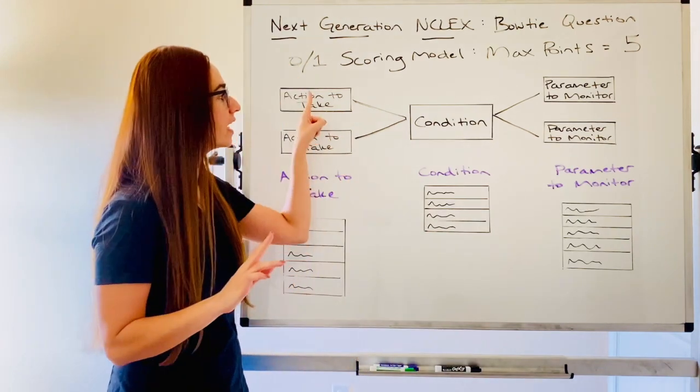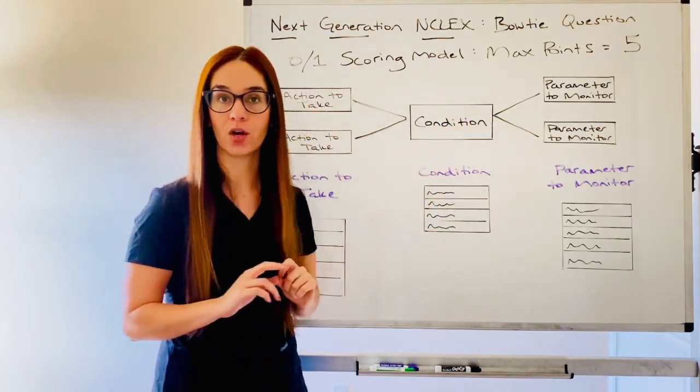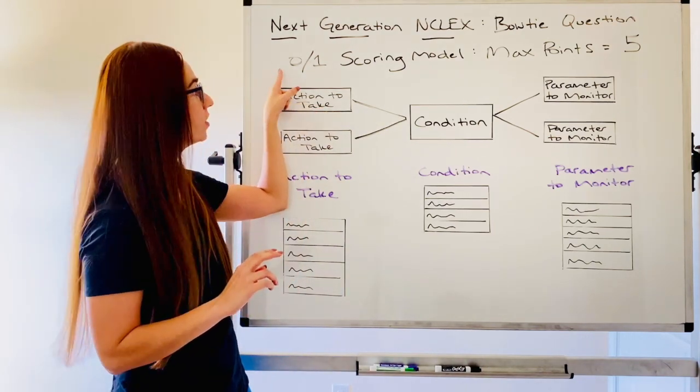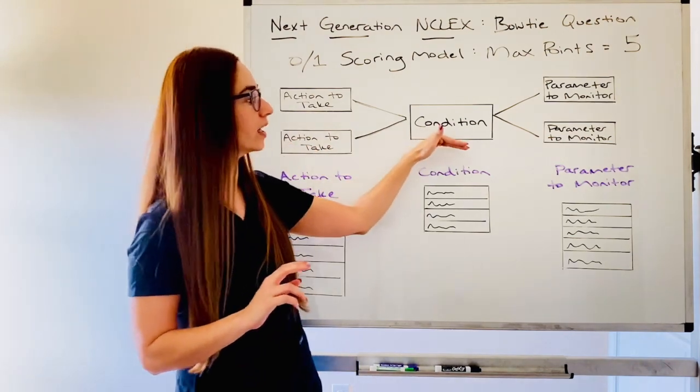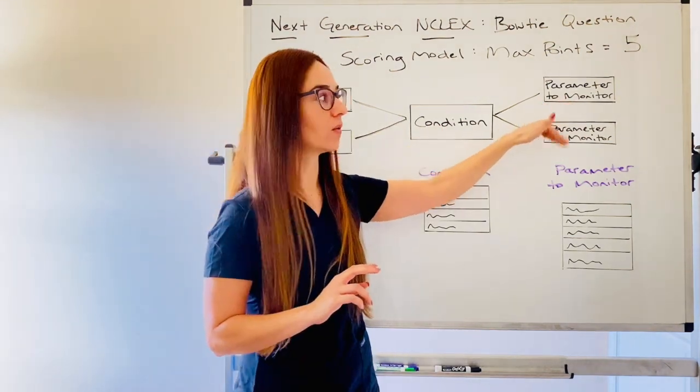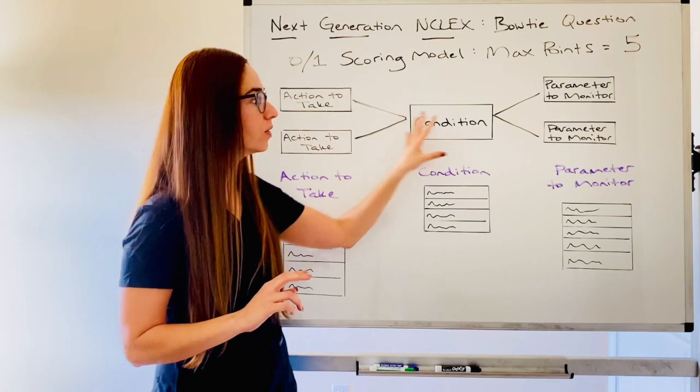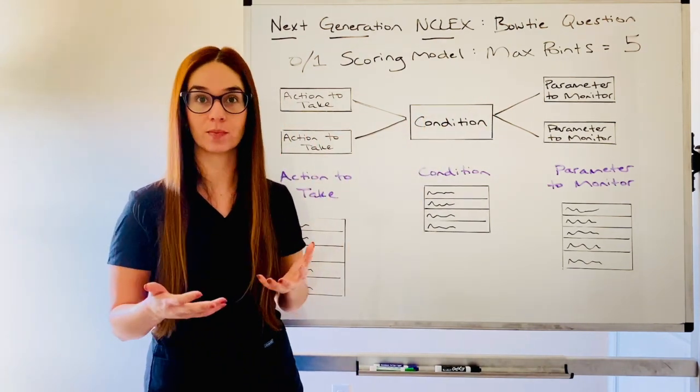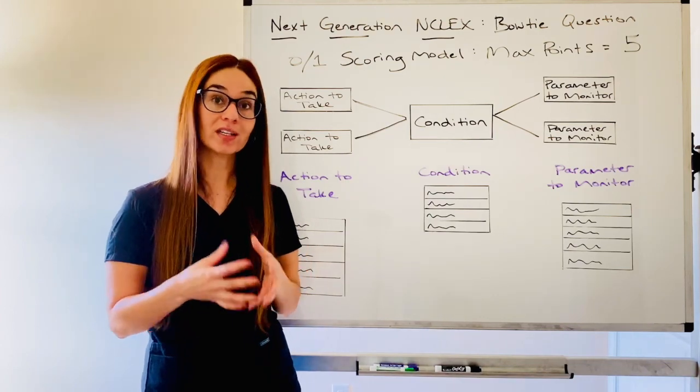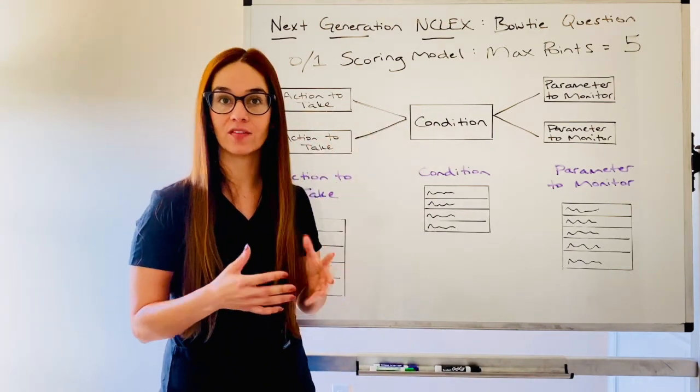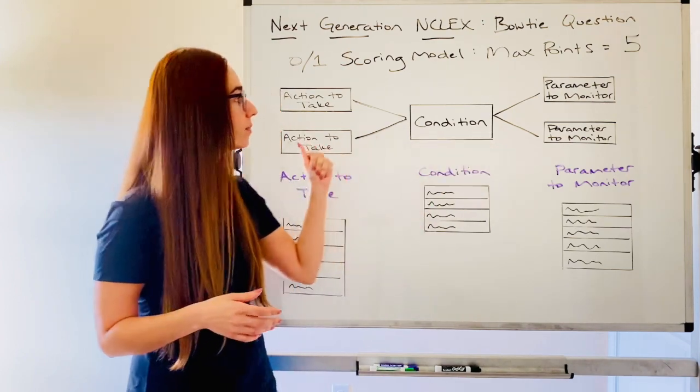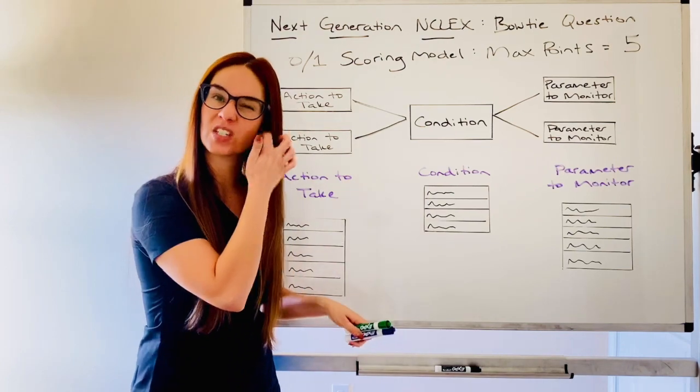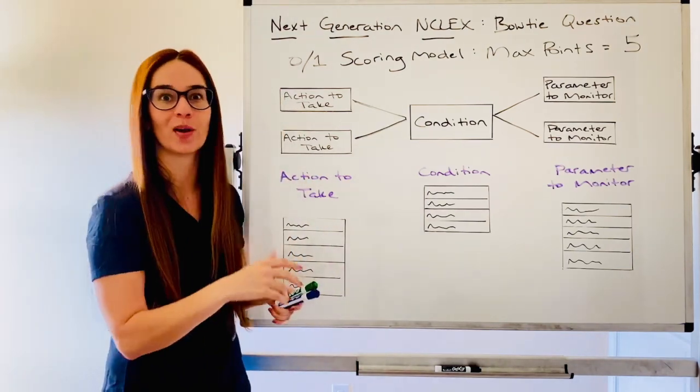I want you to think of each box as a different token. For each box, if you get an incorrect answer, you get zero points. If you get a correct answer, one point. So you have the potential because there's five different tokens to get up to five points. That's your maximum score. Your lowest score is zero points if you don't get any of the conditions or parameters to monitor or actions to take correct.